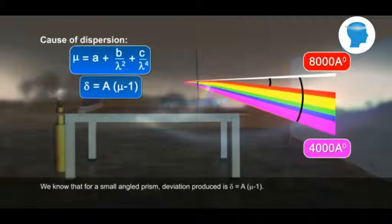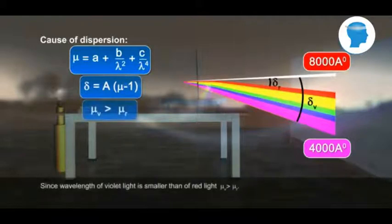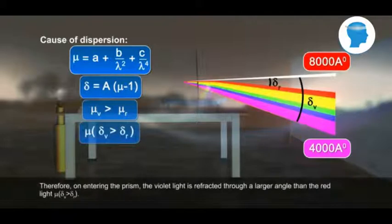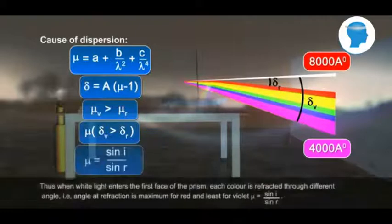We know that for small angle prism, deviation produced is δ = A(μ - 1). Since wavelength of violet light is smaller than of red light, μ_V greater than μ_R. Therefore, on entering the prism, the violet light is refracted through a larger angle than the red light, δ_V greater than δ_R.